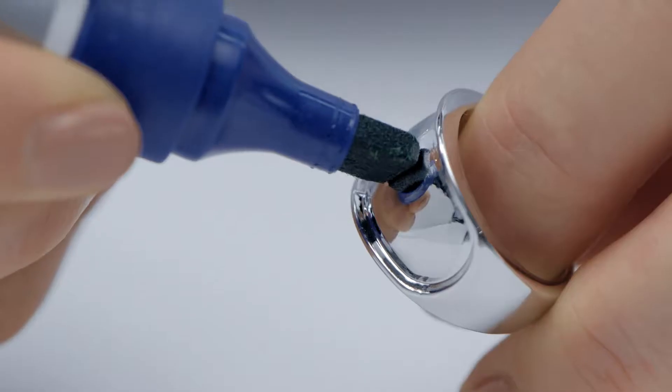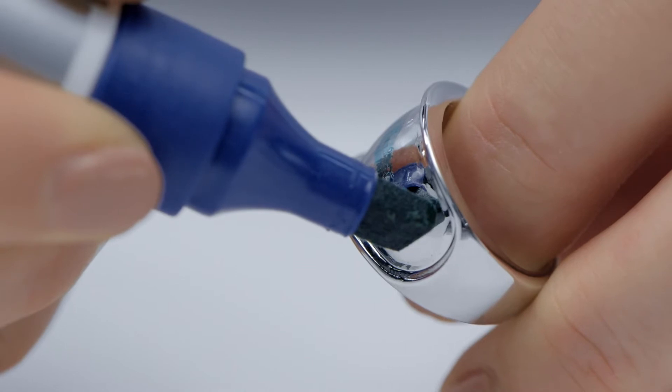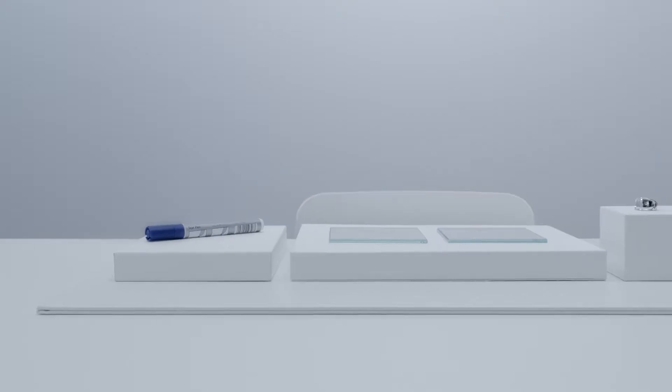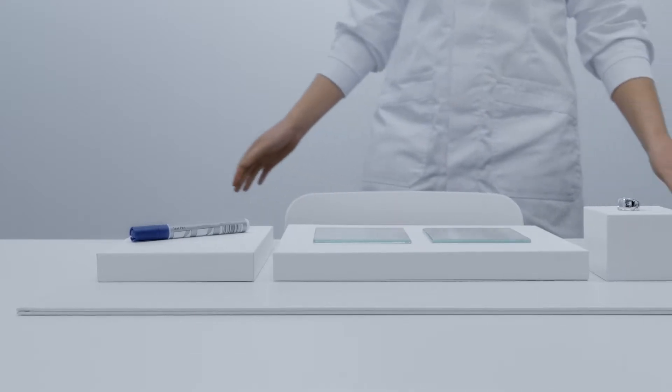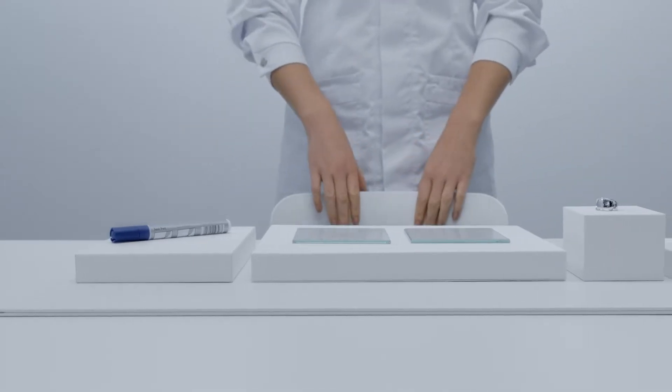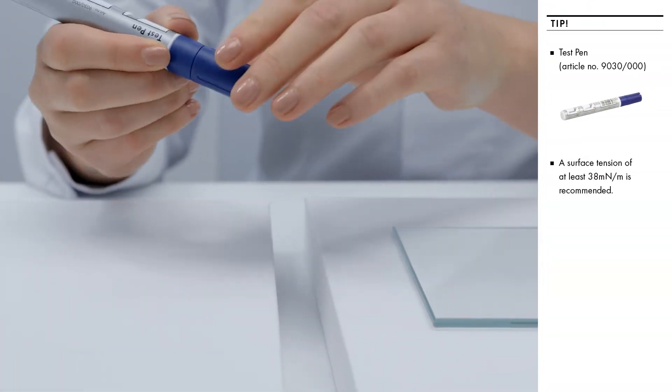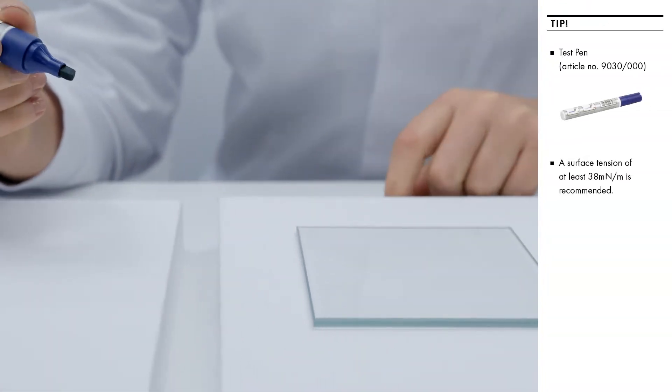We recommend using the Swarovski test pen to measure the material's surface tension before gluing crystals or attaching serolune to it, in order to check if a solid material is suitable for these techniques. Mark the surface to which you want to apply crystals or serolune by carefully drawing a line in ink.